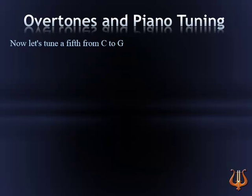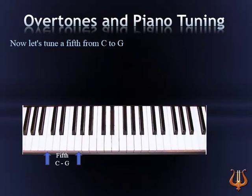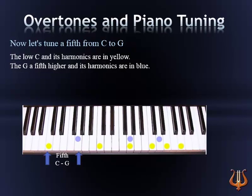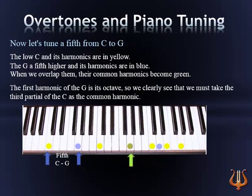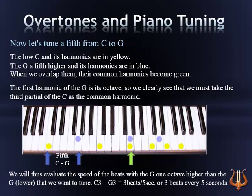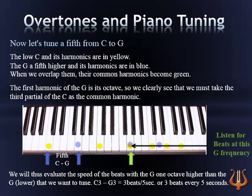Now let's tune a fifth from C to G. The low C and its harmonics are in yellow. The G a fifth higher and its harmonics are in blue. When we overlap them, their common harmonics become green. The first harmonic of the G is its octave, so we clearly see that we must take the third partial of the C as the common harmonic. We will thus evaluate the speed of the beats with the G one octave higher than the lower G that we want to tune. C3 to G3 equals 3 beats every 5 seconds. Start by tuning the fifth C3 to G3 without any beats, and then narrow it to 3 beats for every 5 seconds or so.